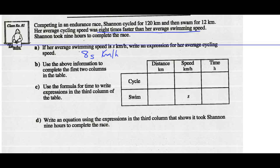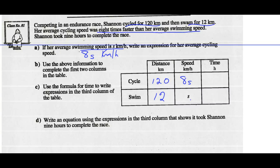Use the above information to complete the first two columns in the table. Shannon cycled 120 kilometers and swam 12 kilometers — that's the distance column. Her average swimming speed is S and her average cycling speed is 8S. Once you get the first two columns filled out, we'll use the distance-speed-time equations to fill in the third column.